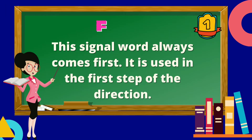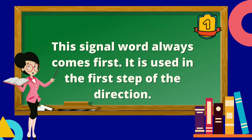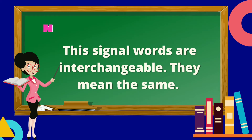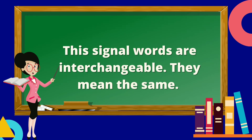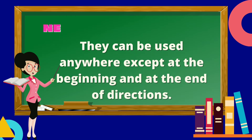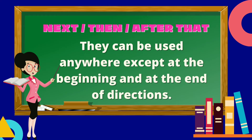Let's study the signal words and when to use them. First — this signal word always comes first. It is used in the first step of the direction. Next, then, and after that — these signal words are interchangeable. They mean the same. They can be used anywhere except at the beginning and at the end of directions.